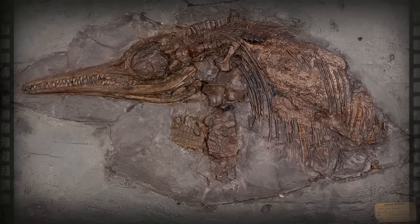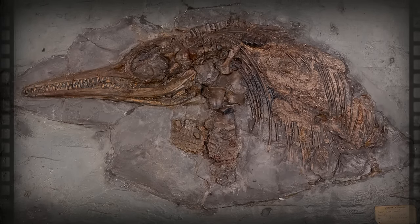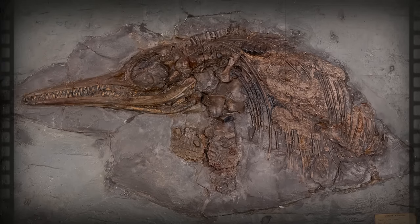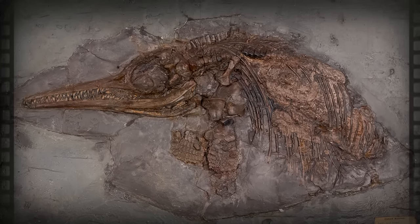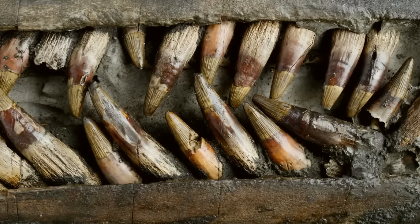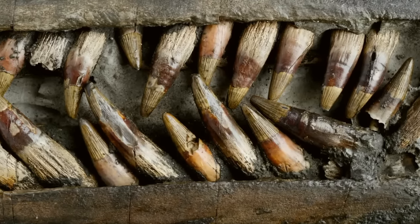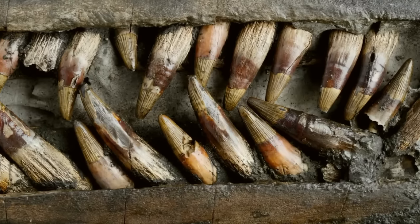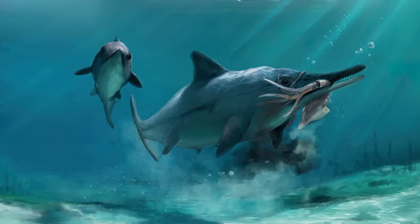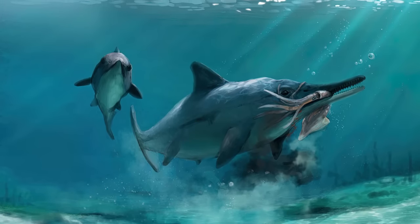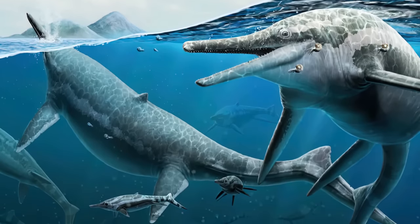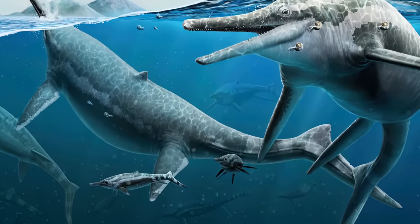Some hypotheses suggest that because most giant ichthyosaur fossils are found without teeth, the animals may have sucked in prey such as cephalopods rather than grasping them. Those with teeth may have behaved more like modern sperm whales, being able to eat squid but also vertebrates such as fish and other ichthyosaurs. Similar to modern cetaceans such as whales and dolphins, ichthyosaurs were air-breathing. It was traditionally assumed that they were cold-blooded, being reptiles.